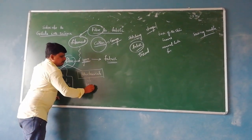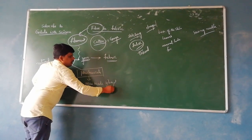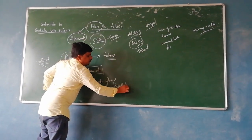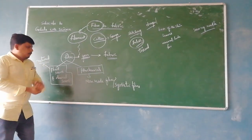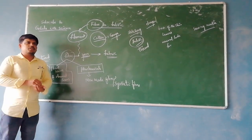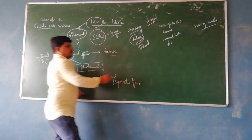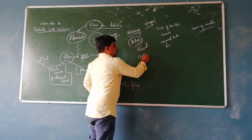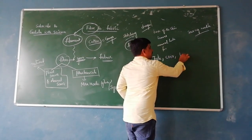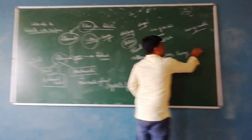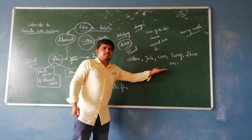These fibers are known as man-made fibers, also known as synthetic fibers. Now we will talk about plant sources and animal sources. We will talk about cotton, jute, coir, hemp, flax, etc. These are all derived from plants.